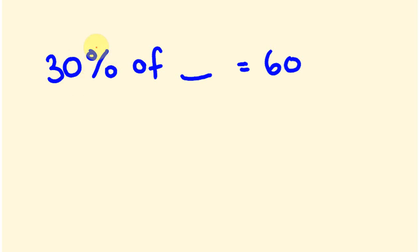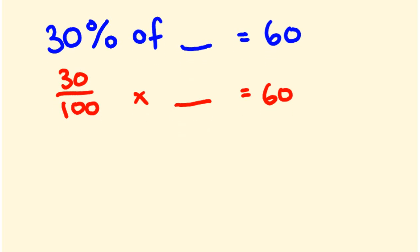First off, it's really important to change this 30% and to understand 30% means 30 out of 100. Whenever in maths you see of, it means times. So 30 divided by 100 times this unknown number is equal to 60. So all I've done is I've rewritten it out as this type of maths question.